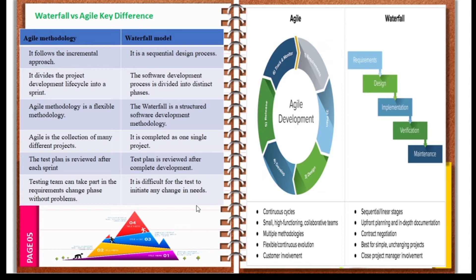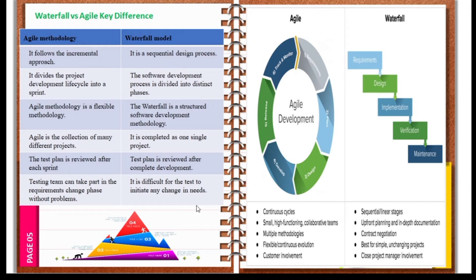Waterfall is static and structural, and it is a collection of many different projects. A regular project can run using Waterfall methodology, but a new type of project may not. In the Waterfall model, everything is completed as one single project — it cannot handle multiple projects at a time, making it difficult to manage academic or varied projects.